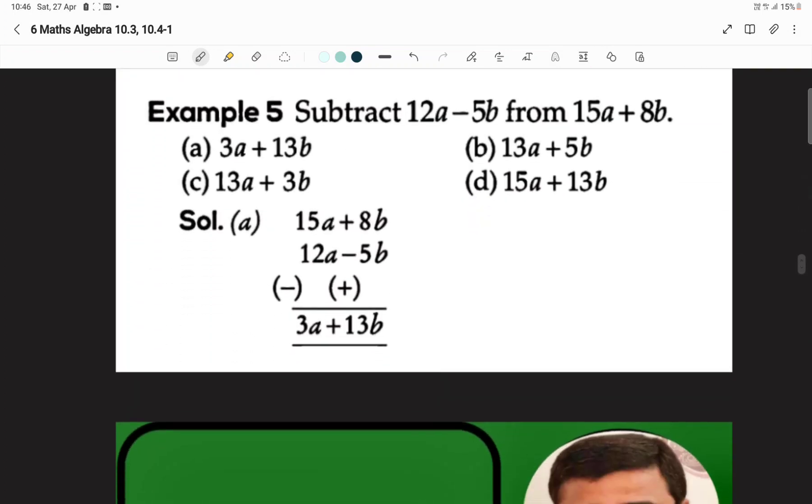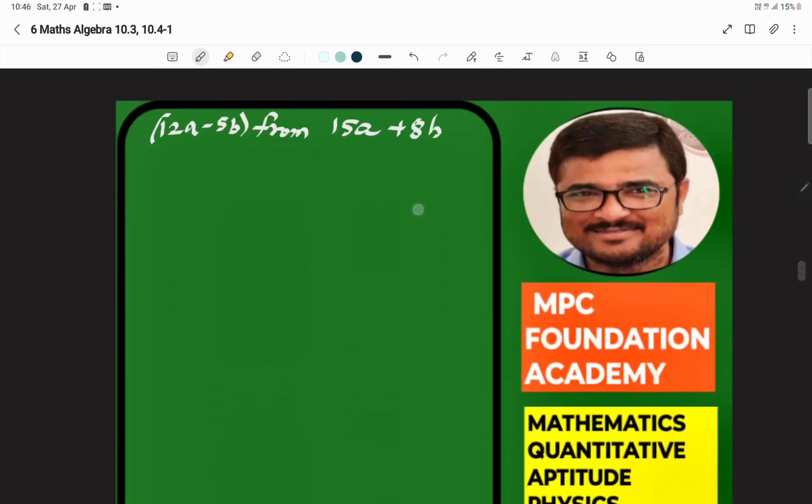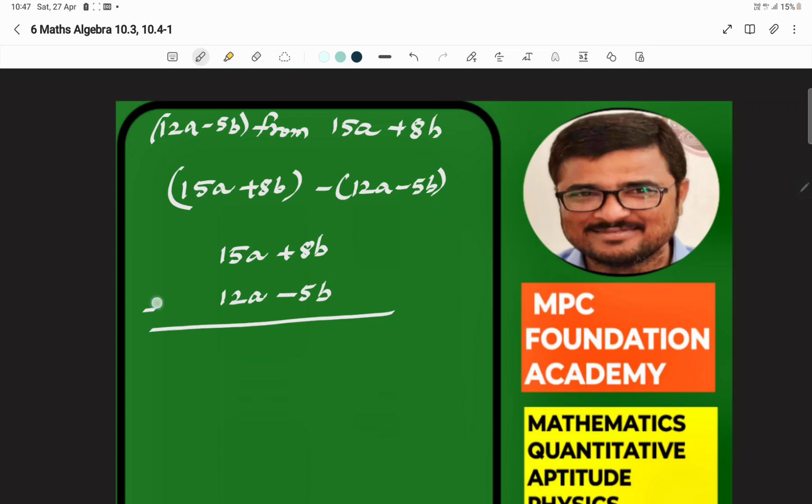Next, subtract 12a minus 5b from 15a plus 8b. In the first term, we have 15a plus 8b. In the second term, we have to subtract 12a minus 5b.